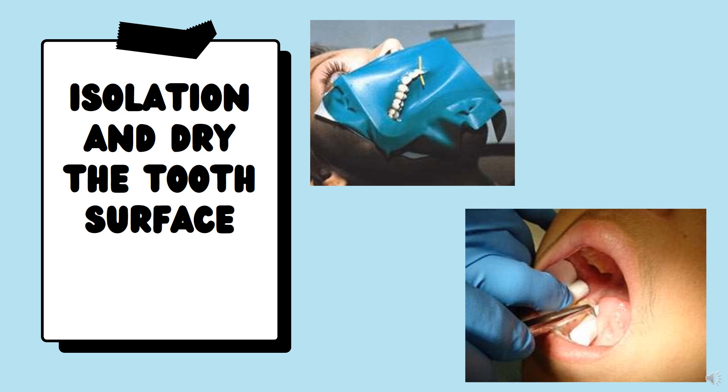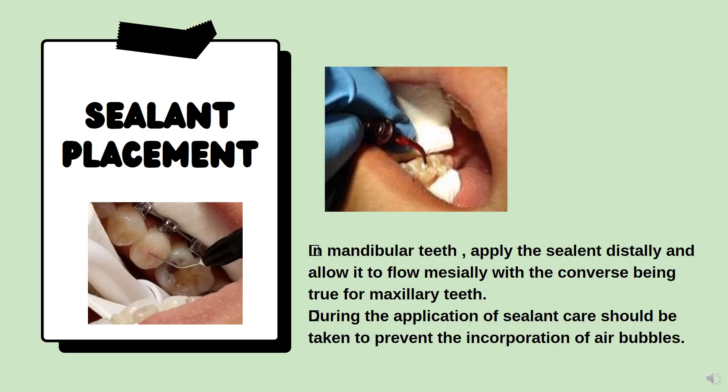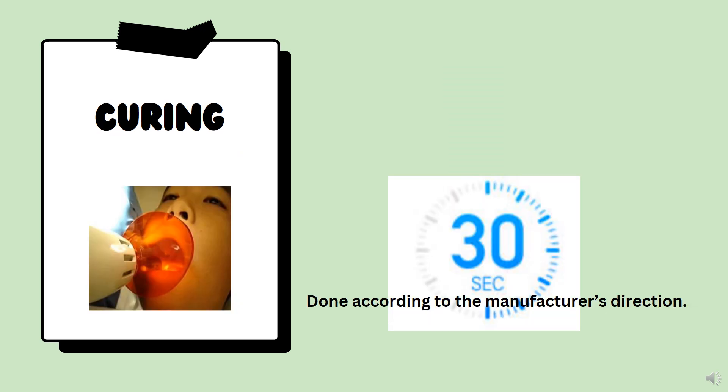Next is isolation and drying again — this is a bonding step. For sealant placement: in mandibular teeth, apply the sealant distally and allow it to flow mesially; the converse is true for maxillary teeth. During application, take care to prevent incorporation of air bubbles, as air bubbles can cause the sealant to fail and come out. Curing should be done for 30 seconds.